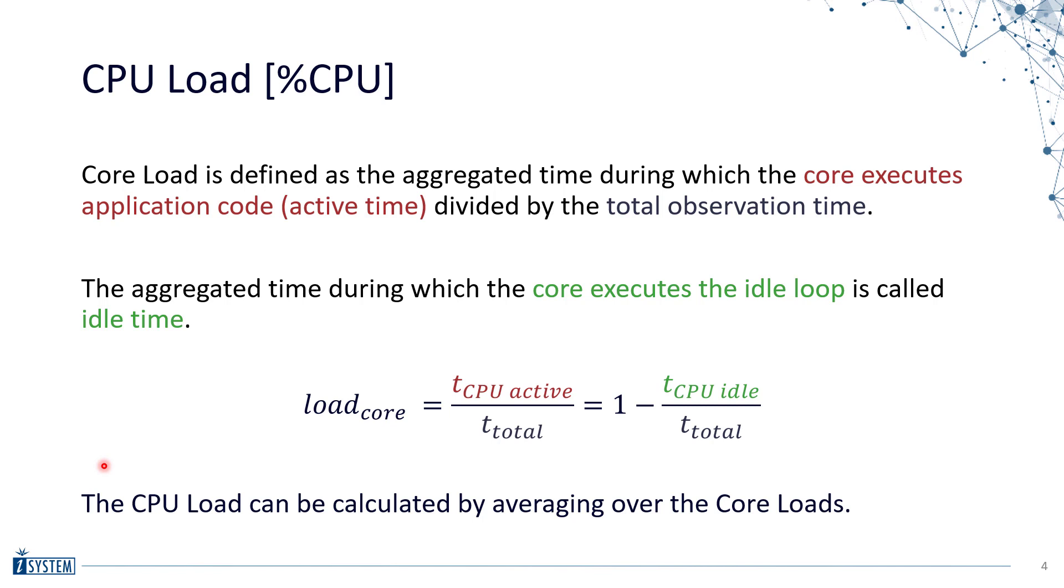So how do you calculate the core load? First we have the so-called active time, the time when the core executes actual application code. By dividing that time by the total observation time we get the load. Alternatively we have the idle time, the time during which the core executes the idle loop. By calculating one minus the idle time divided by the total time we can also get the core load. Then we can calculate the CPU load by averaging those values.